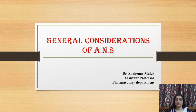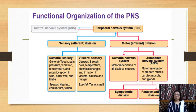Welcome to Pharmacomania. Today's topic of discussion is the general consideration of the autonomic nervous system. We will cover the functional organization of the peripheral nervous system. Before the peripheral nervous system, we will discuss the central nervous system, which is made up of two parts: brain and spinal cord.